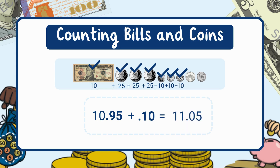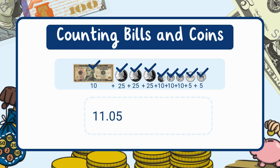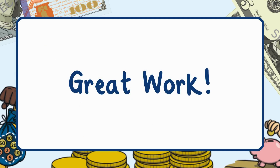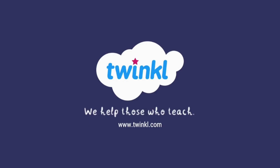Now we have eleven dollars and five cents. Last, let's add two nickels. A nickel is five cents: 5 plus 5 equals 10, so the two nickels make ten cents. Eleven dollars and five cents plus ten cents equals eleven dollars and fifteen cents. Great work — you've learned how to count money! Subscribe to Twinkle Teaching Resources USA for more.